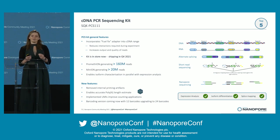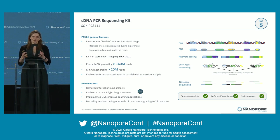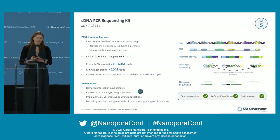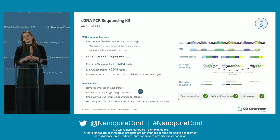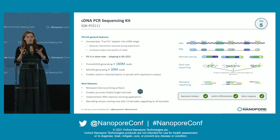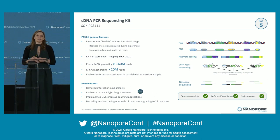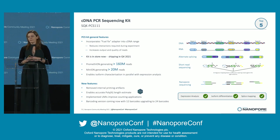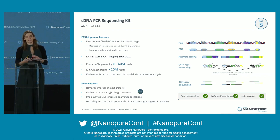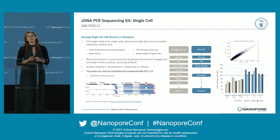Then cDNA: this is a really exciting kit because we're finally pairing the fuel-fix adapter with our cDNA kit. It's incredibly important because cDNA is all about short reads — everything's about a kilobase long. With this kit and improvement, we've generated over 160 million reads off a single Promethium flow cell and over 20 million reads off a MinION flow cell. Other things included: we've reduced internal priming issues from the previous kit, enabled poly-A tail length determination, incorporated UMIs which improve the counting, and there are barcoding versions. The cDNA kit is live in the shop today — you can go and order it. And it's doubly exciting because it really starts enabling single cell.